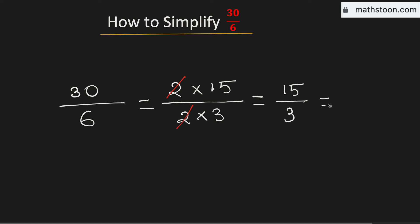Again see that we can write 15 as 3 times 5 and 3 as 3 times 1. Therefore we can cancel again 3 out and this is now equal to 5 over 1 which is same as 5.